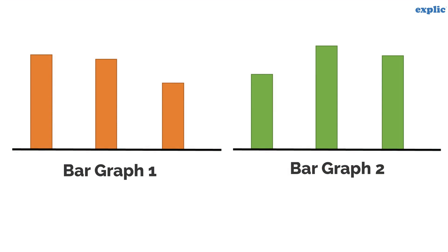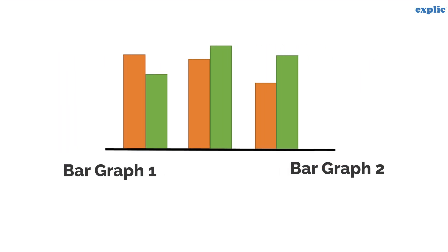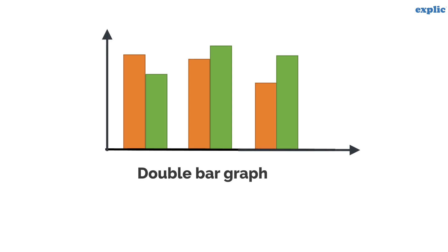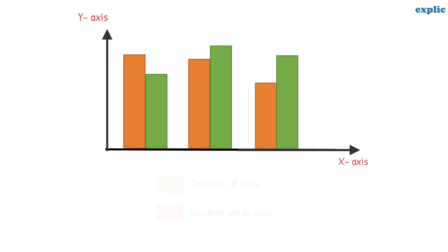In a double bar graph, we actually merge two bar graphs and compare. Therefore, a double bar graph shows the two sets of comparable data in a single graph. In a double bar graph, both bars use the same X and Y axis.